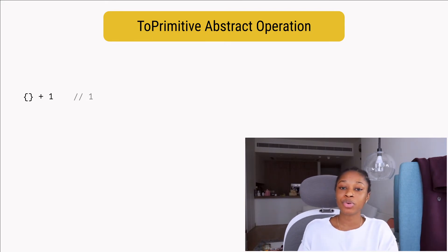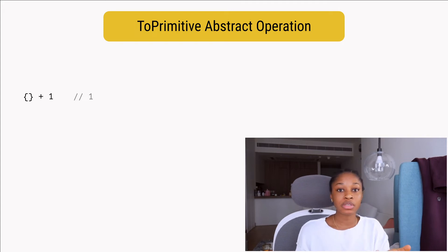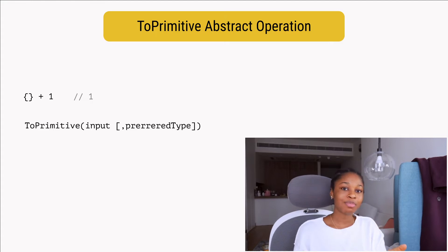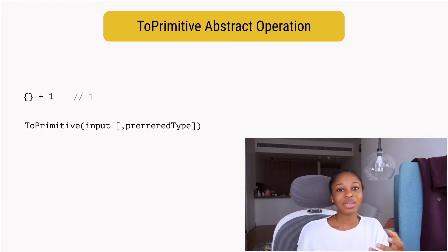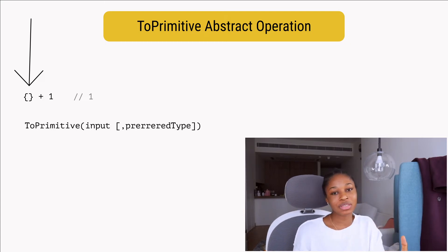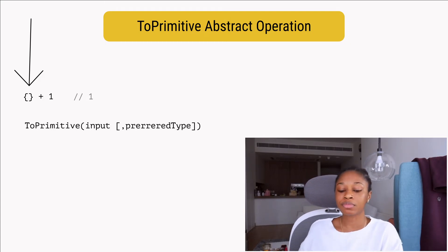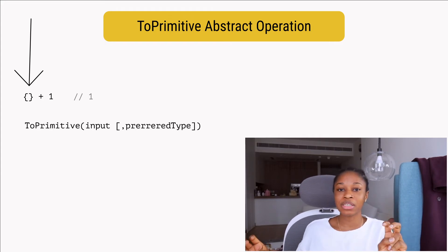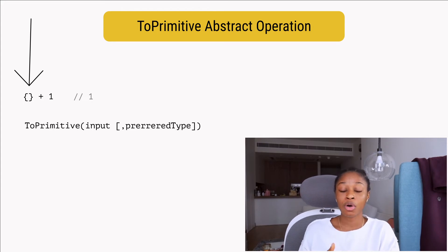According to the spec, the ToPrimitive abstract operation takes two arguments. The first one is the input — the value that needs to be converted to a primitive. The second one is the preferred type hint. There are three types of hints that can be sent: string, number, or default.